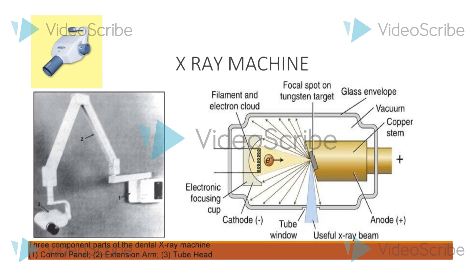The filament is the source of electrons within the X-ray tube which is made up of tungsten wire about 2 mm in diameter and 1 cm length mounted on two stiff wires. It is heated by the flow of current from the low voltage source and emits electrons.